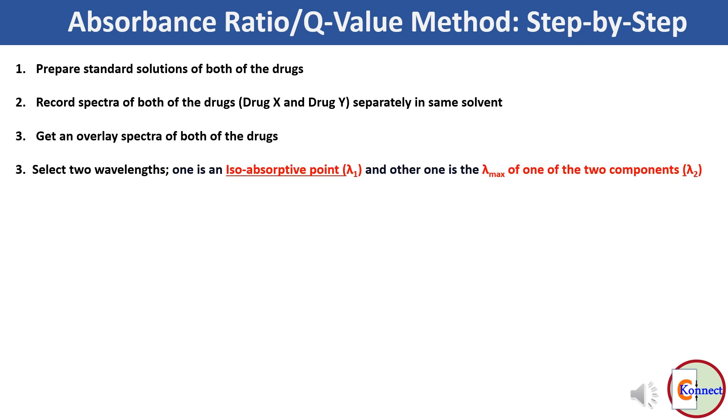Now select two wavelengths, one is an isoabsorptive point, say lambda 1, and the other one is the lambda max of one of the two components, say lambda 2.